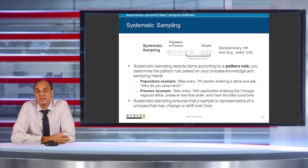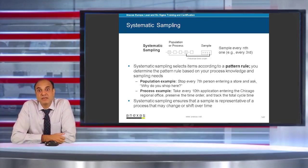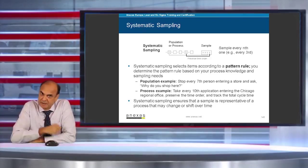A process example could be in a bank—suppose you are trying to estimate the account opening time. So you sample every tenth account opening request received from the customer. Systematic sampling ensures that a sample is representative of a process that may change or shift over a period of time.